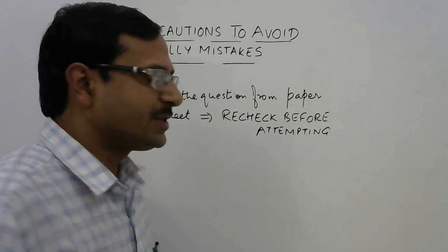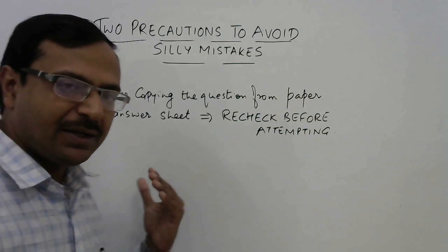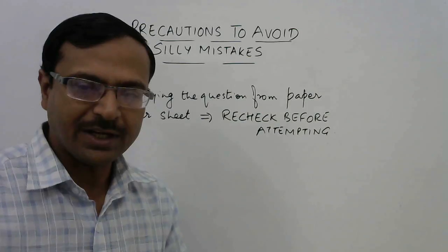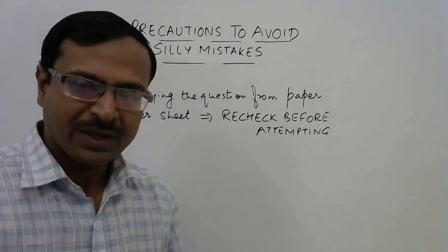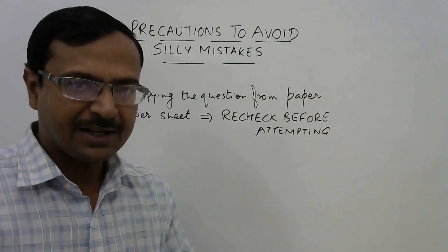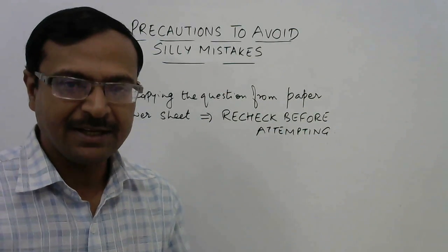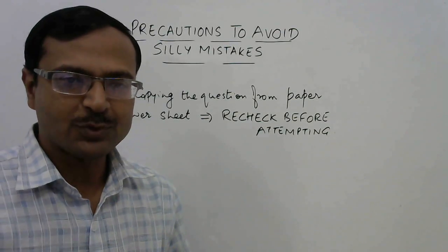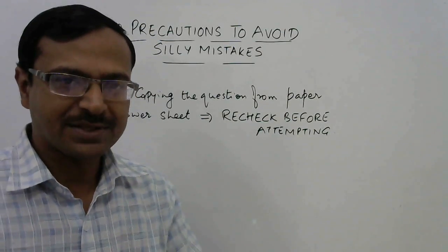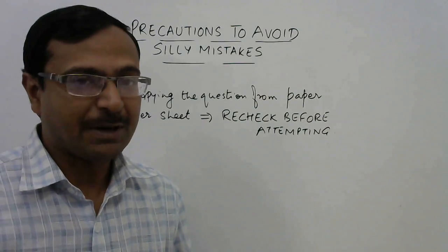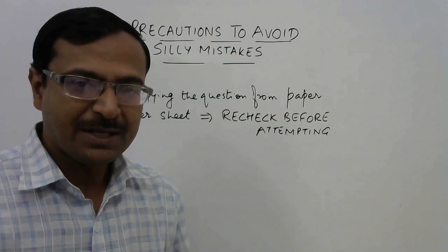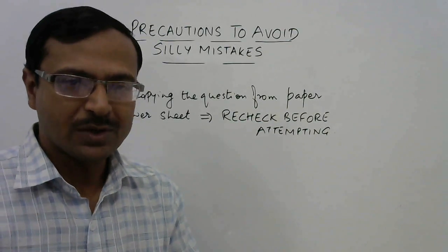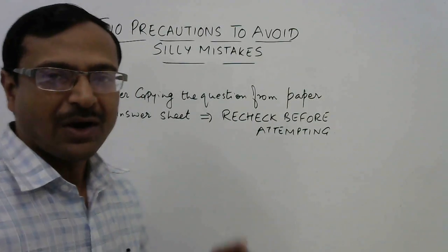A lot of times when we copy a question in the form of an equation—it may be a linear equation, quadratic equation, or simplification question—we tend to make mistakes of sign (plus or minus) or quantities. Sometimes the quantities are confusing, so when we copy from the question paper to the answer sheet, we commit mistakes, thereby losing marks.